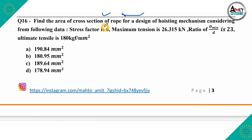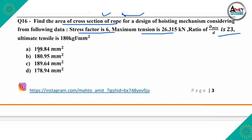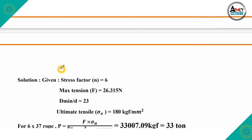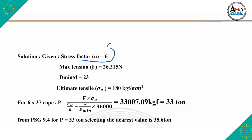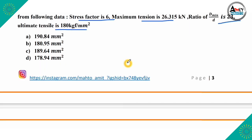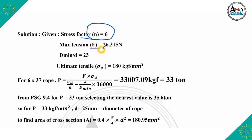Question number 16: find the area of cross section for a rope design of a hoisting mechanism considering the following data — stress factor N = 6, maximum tension F = 26.315 kN, ratio of D minimum to D = 23, and ultimate tensile stress σU = 180 kgf/mm². Using the formula from PSG data book page 9.1 for 6×37 rope type: substituting F = 26.315 N, σU = 18,000, N = 6, and d/D_min = 1/23.